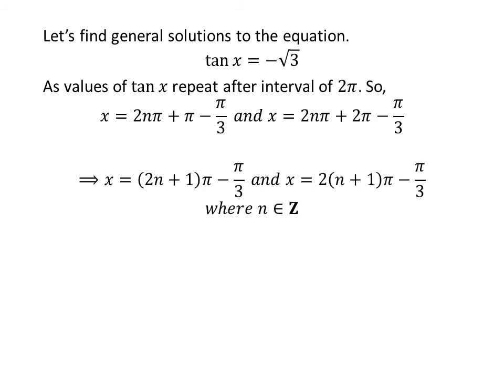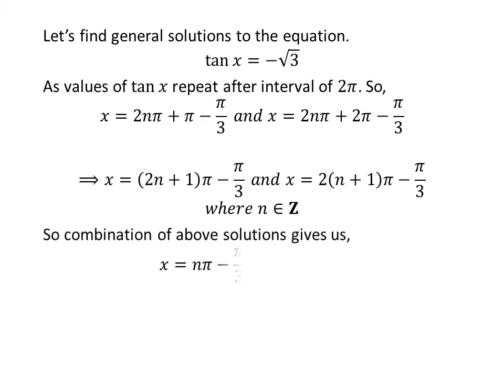After simplification, the general solutions can be written as expressions of the form involving 2n plus 1 times pi minus pi upon 3. Since 2 times the quantity n plus 1 is an even integer and 2n plus 1 is an odd integer for any n, the union of these two sets is the set of all integers. So the general solution to the equation is n times pi minus pi upon 3, where n is any integer.